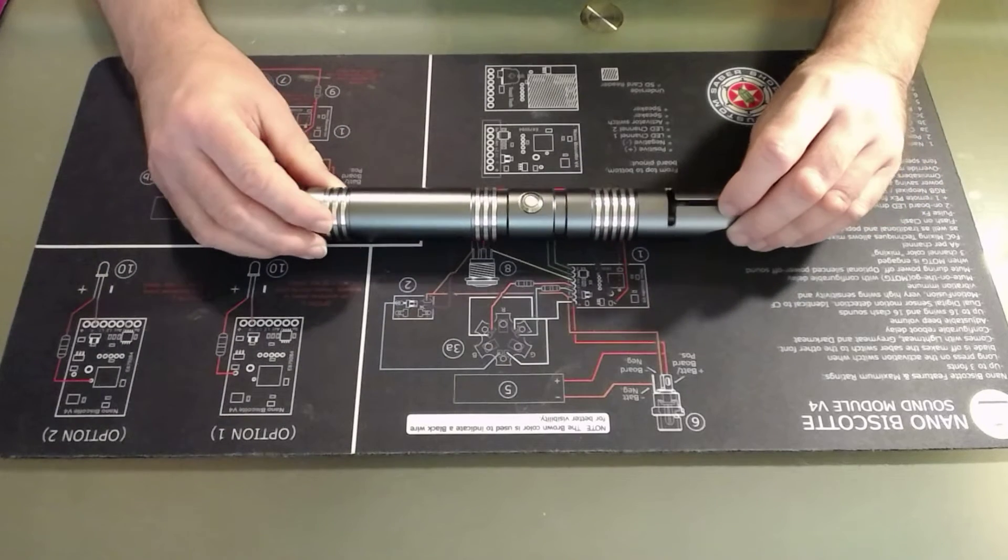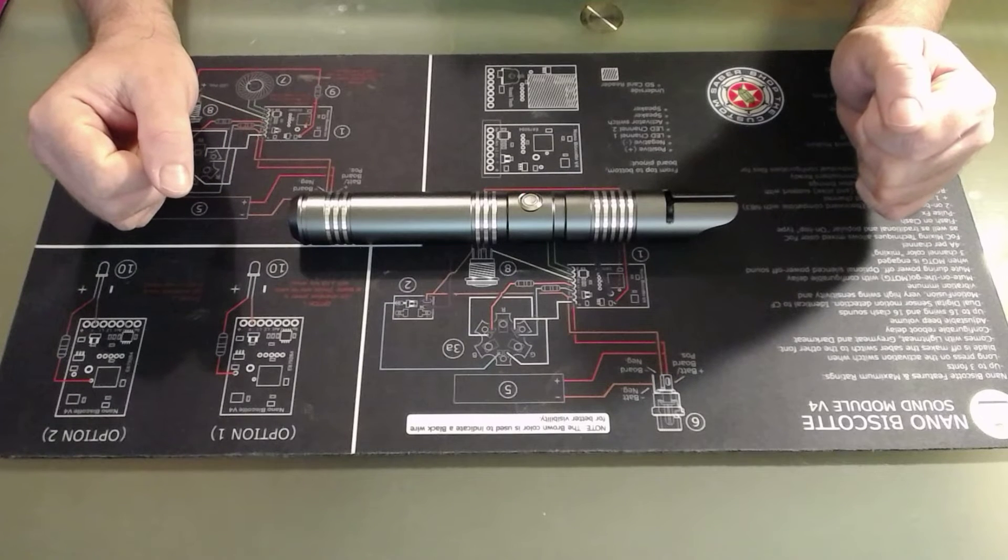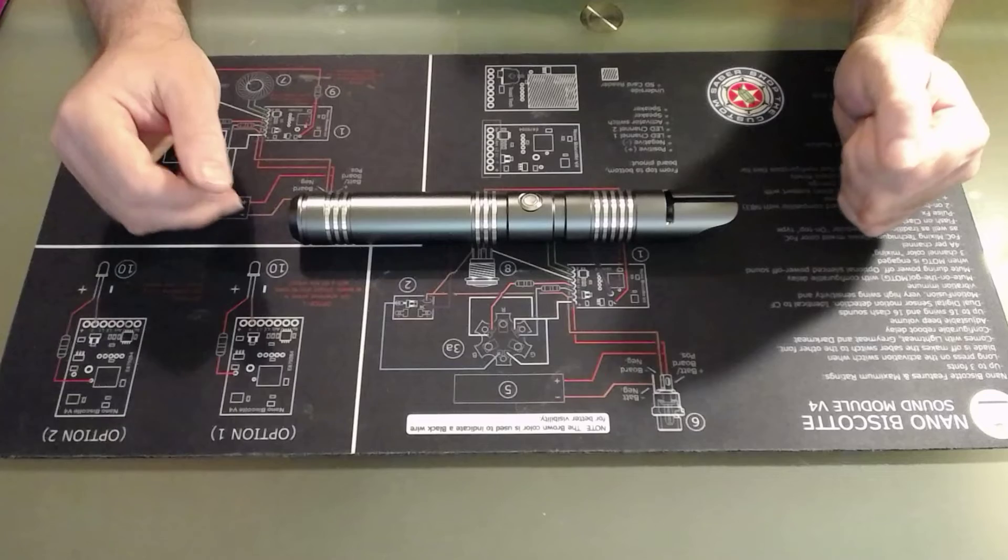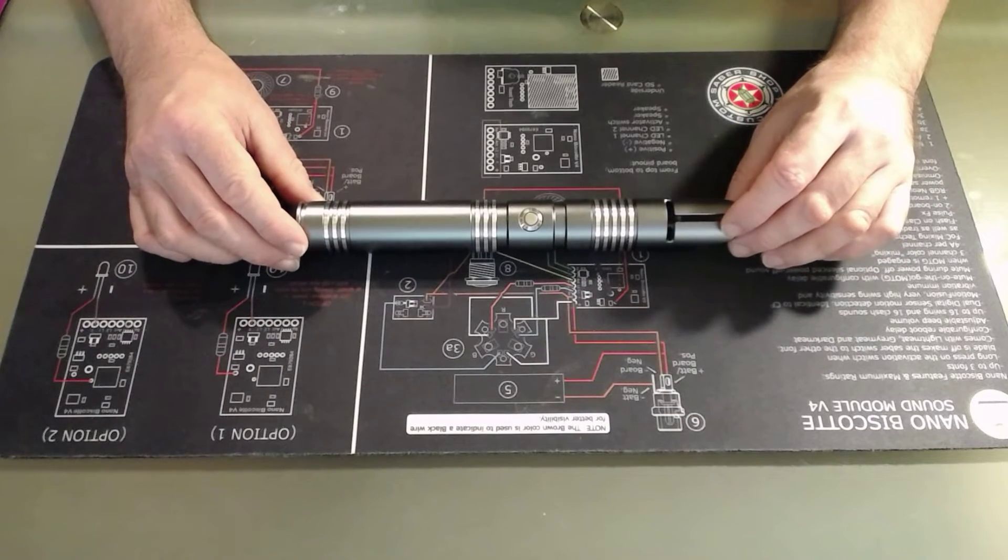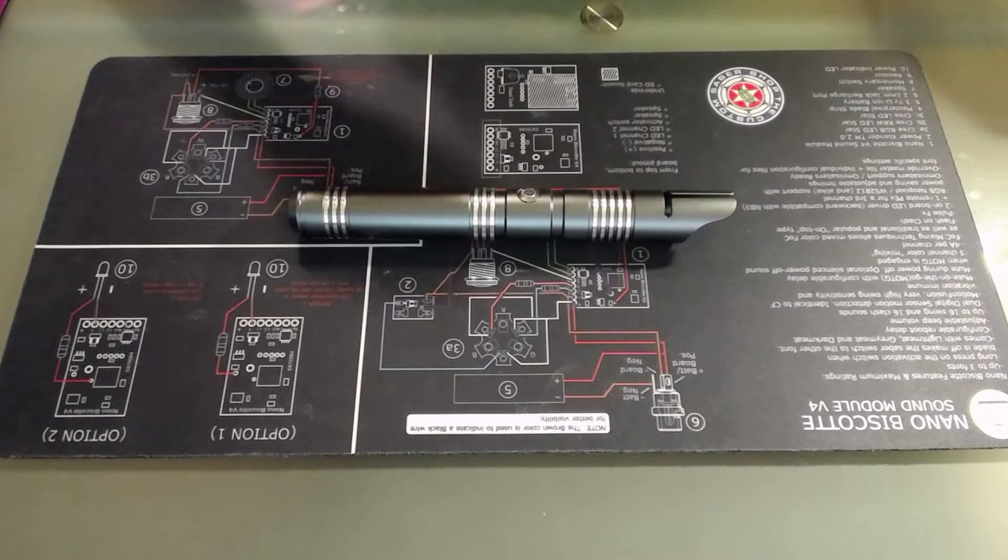It won't cover operation because the Sabre comes with a couple of install options, RGB Baselet or SNPixel option. So for operation, just refer to those videos separately. This is simply a recommendation and physical overview.